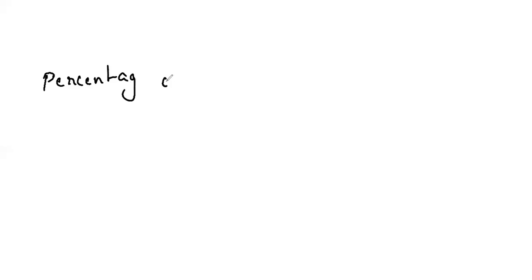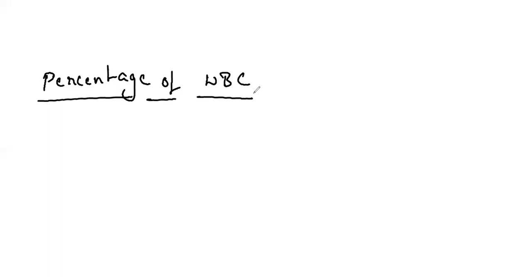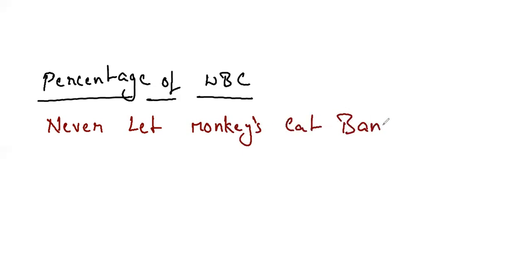So the next mnemonic is for the percentage of WBC. So many of them will be confused knowing this percentage. Neutrophils is 60%, lymphocytes 30%, monocytes is 6%, eosinophils is 3%, and basophils is 1%. So you can remind this like: 'Never let monkeys eat bananas.'